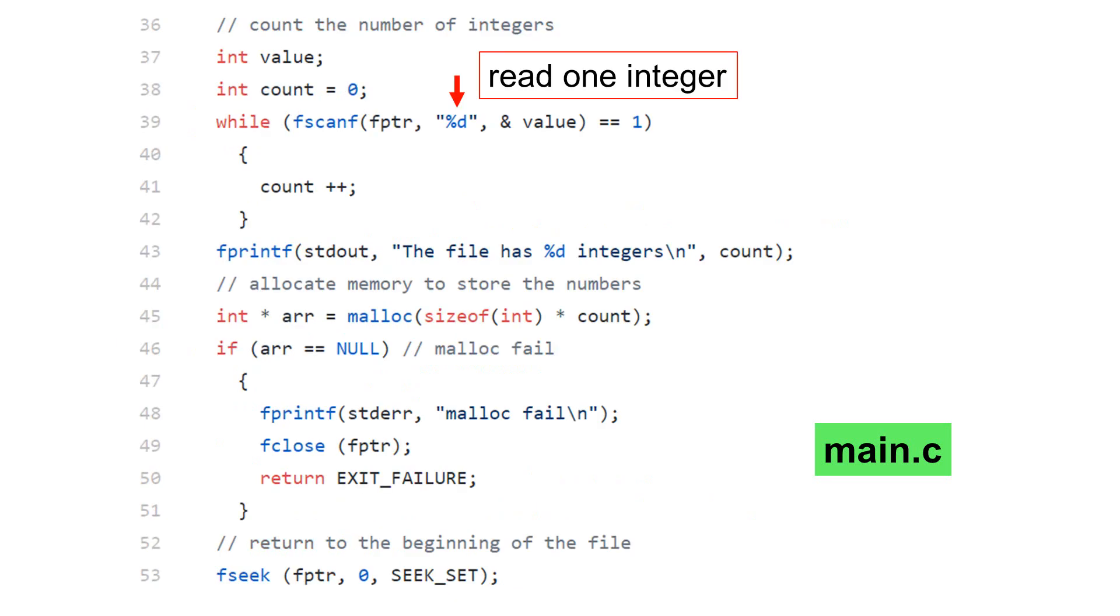Let's continue discussing the content of the main function. Lines 39 to 42 read one integer at a time from the file and count the number of integers. The function fscanf is similar to the function scanf, except fscanf reads from a file. The first argument is the file pointer.